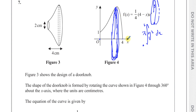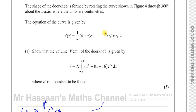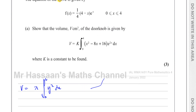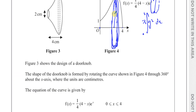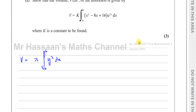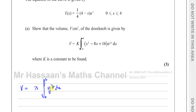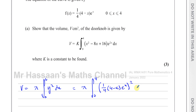So a curve rotated around the x-axis forms a three-dimensional shape whose volume is given by this integral from 0 to 4. We take the original equation and say this is going to be π times the integral between 0 and 4 of y squared dx. Now y is the whole equation, which is one quarter times 4 minus x times e to the power of x, all squared, dx.